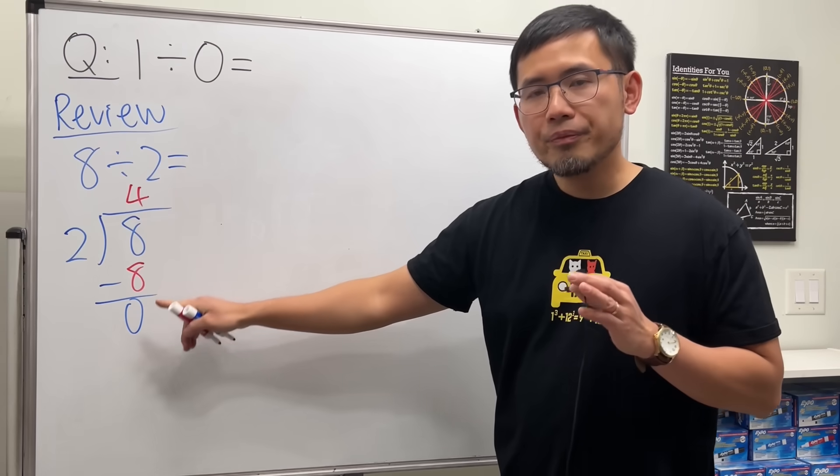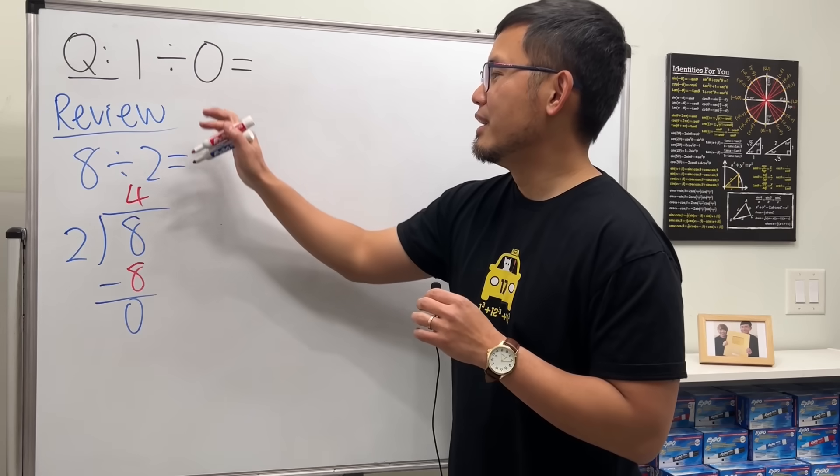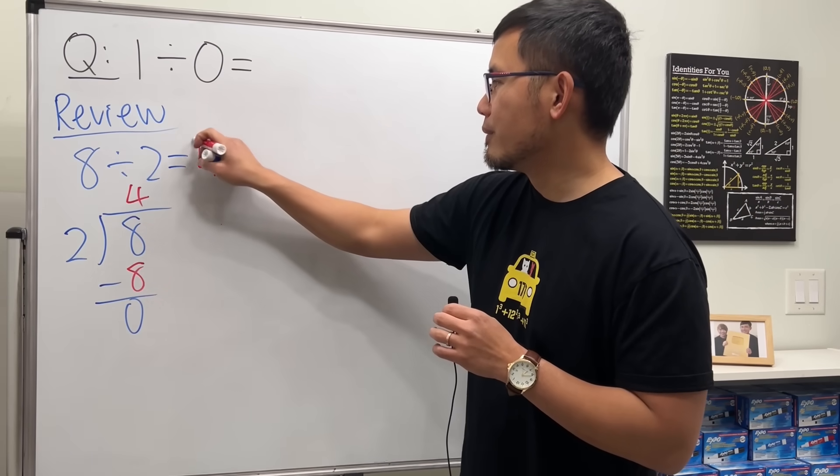This right here is the remainder. If the remainder is 0, you are done. And that's the answer. 8 divided by 2 is 4. Done.